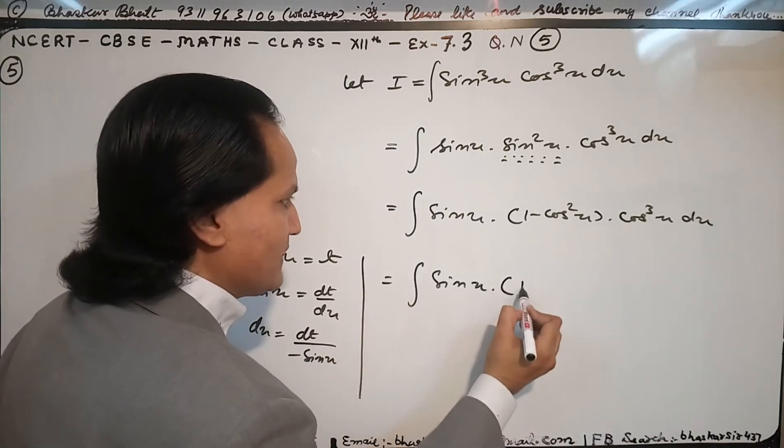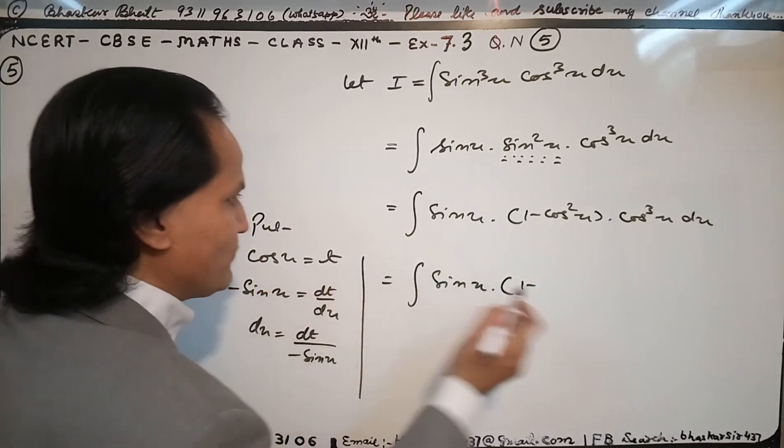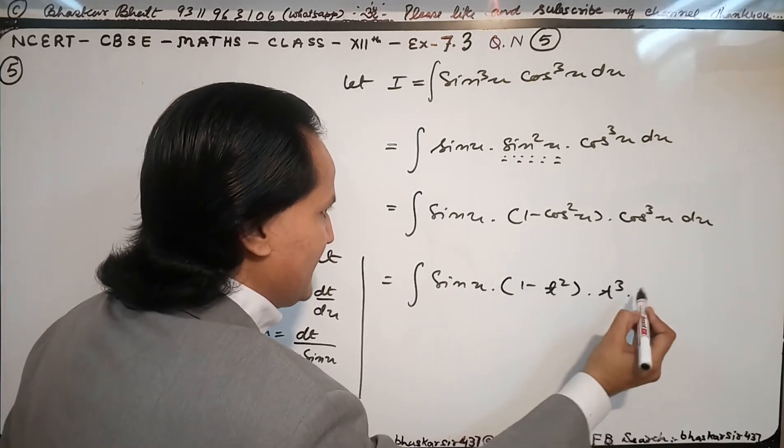Sine x times 1 minus, in place of cos x I will put t, t square times t cubed, and in place of dx I will put dt by sine x.